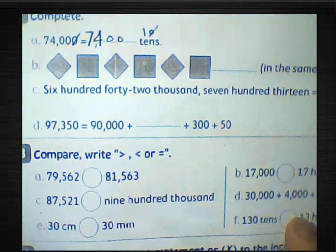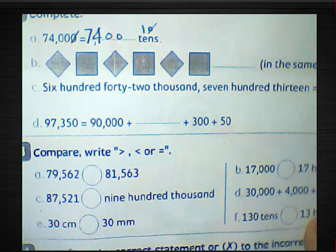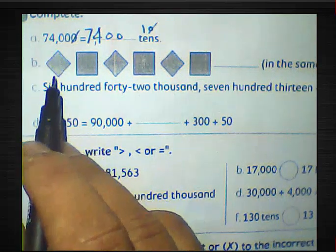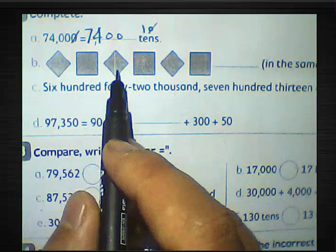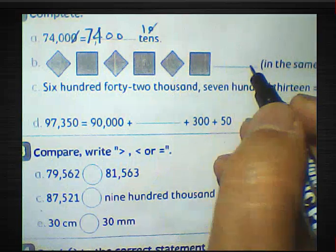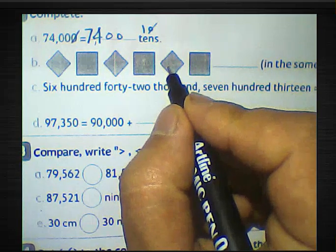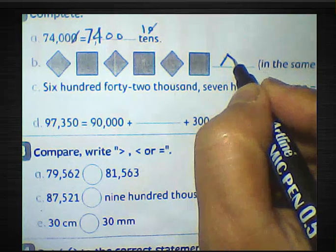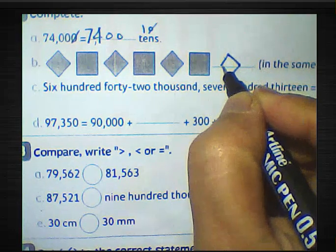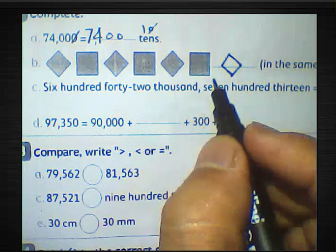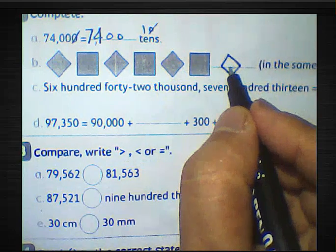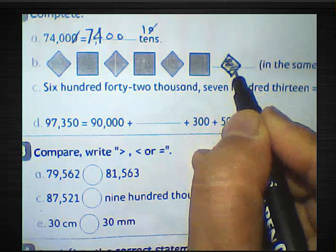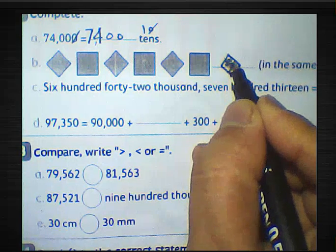Part P: complete the same pattern. We have a square, a rotated square, then square, square, square. Following the same pattern, we draw a rotated square next.